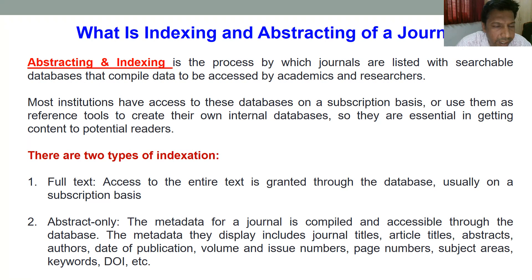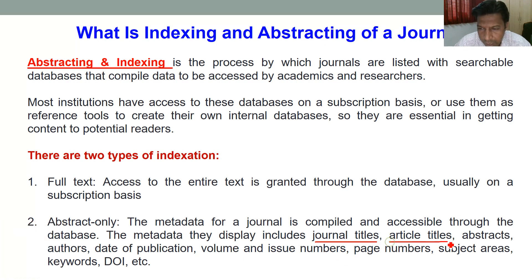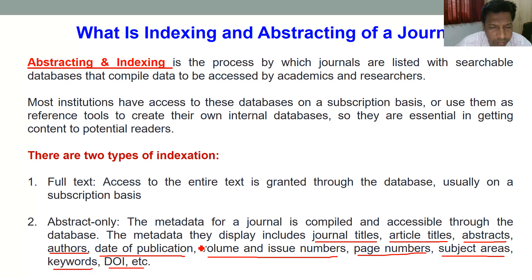The second type is indexing to metadata only, which is called abstracting. Indexing to abstract means you have access to metadata only. Metadata covers the journal title, article title, abstract, author names, date of publication, volume and issue numbers, page numbers, subject area, article keywords, and UI number. The full paper is accessible only when the full text is indexed in the indexing system.